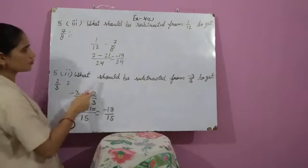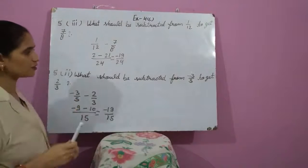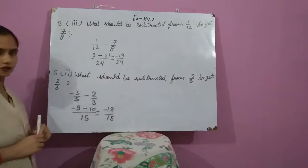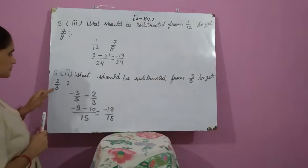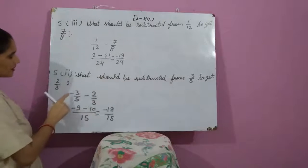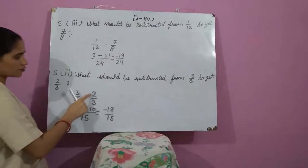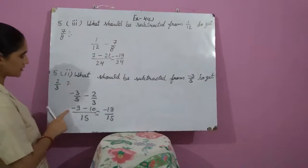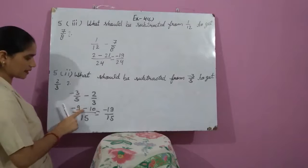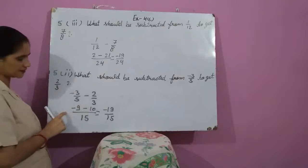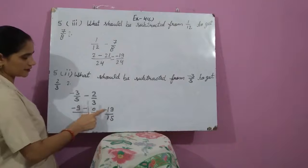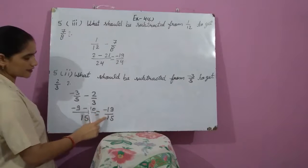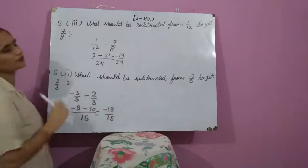Question number 5, second part: What should be subtracted from minus 3 upon 5 to get 2 upon 3? To find the required number we compute minus 3 upon 5 minus 2 upon 3. The LCM is 15. After the calculation we get minus 9 minus 10. So minus 9 minus 10 gives minus 19 upon 15. This is the required rational number.